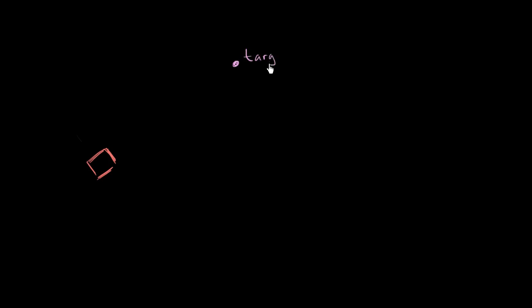Let's say that you have two folks that are trying to collectively push a box across the snow towards a target. So this is where the box is, right over here, and this is the target, right over here. That's where they're trying to get the box. Person A, because they can't push it exactly from behind the box — maybe there's not good footing there — has to push in a direction that's not exactly going in the direction of the target. So they push in a direction that looks like this. This vector I'm drawing represents the force that they are exerting — this is person A's force vector.